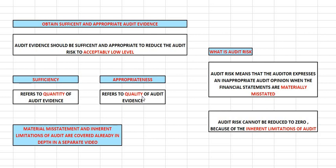We say 'acceptably low level' because of the inherent limitations of audit. The inherent limitation of audit is that you are not going to do 100% checking. You might miss out on something. Any audit cannot claim to give full, absolute assurance — you are only going to be giving reasonable assurance. That's an inherent limitation of audit.